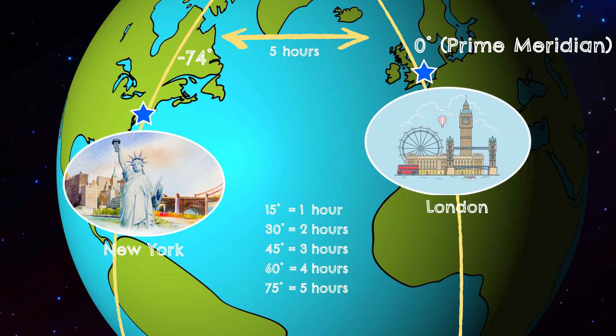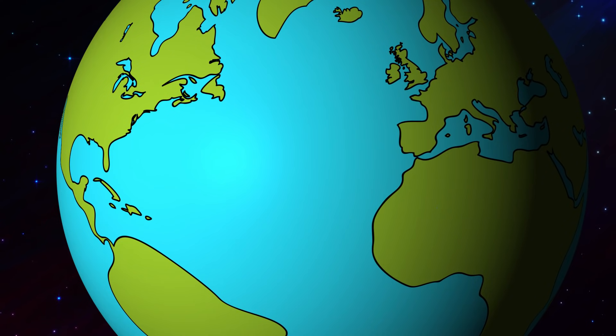The prime meridian marks the baseline time zone, which is called Greenwich Mean Time, or GMT. All other time zones are measured relative to GMT.